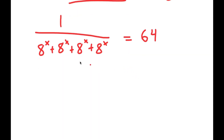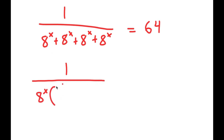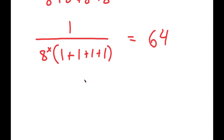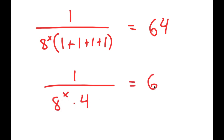Notice how I have 4 of the same terms in the denominator, meaning I can factor out that one term. So I get 1 over a to the power of x times (1 + 1 + 1 + 1), which is equal to 64. And 1 plus 1 plus 1 plus 1 is 4, so I get 4 over a to the power of x is equal to 64.